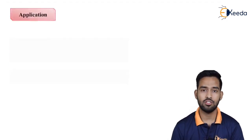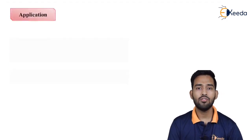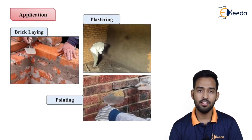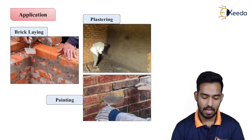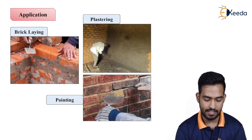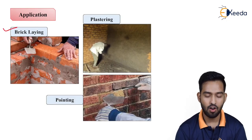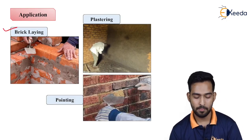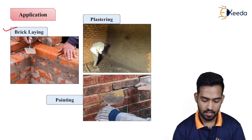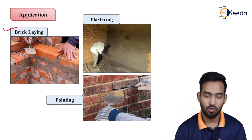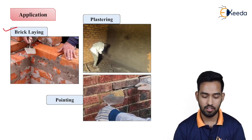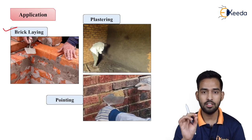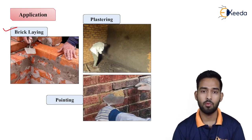Now, where is mortar applicable? Mortar can be applied in bricklaying — it is applicable for stone masonry or brick masonry. As you can see, when we have to set the bricks one over another, between two bricks we have to apply a layer of mortar.